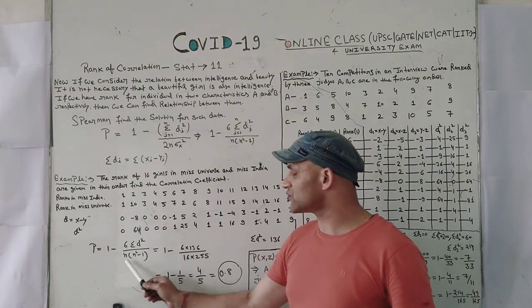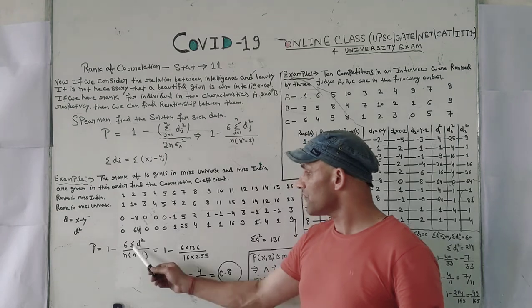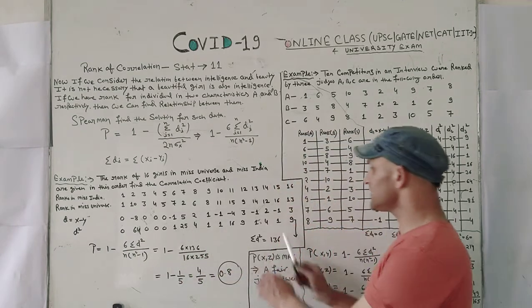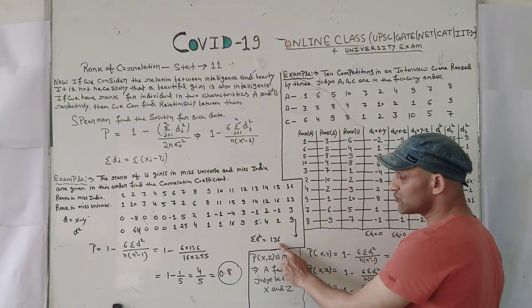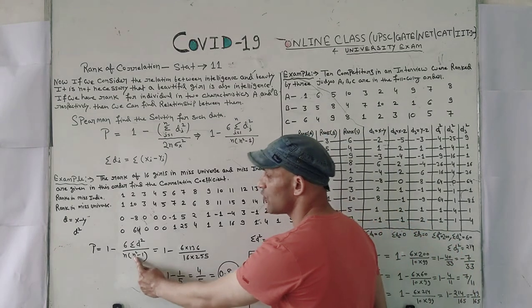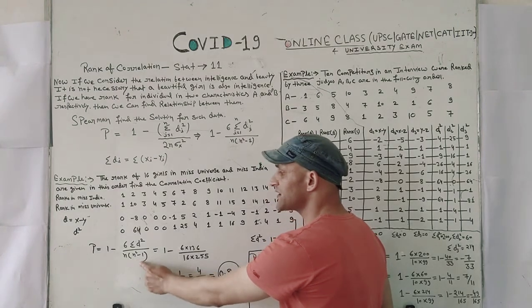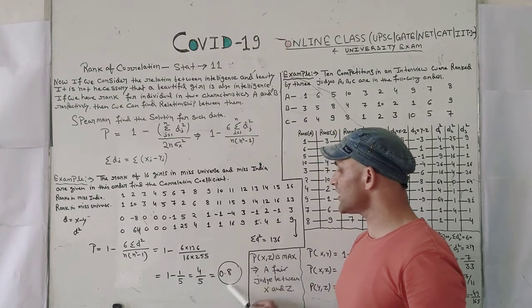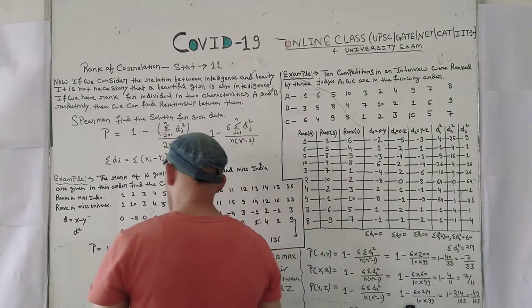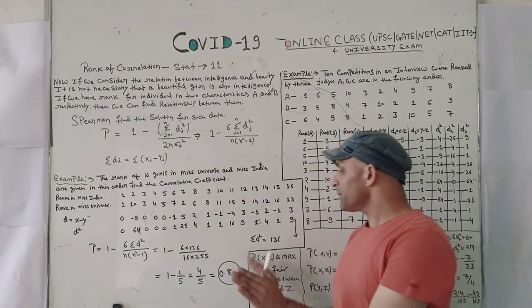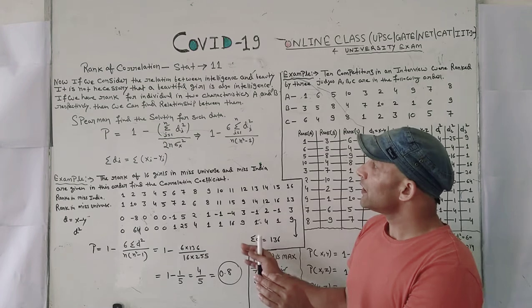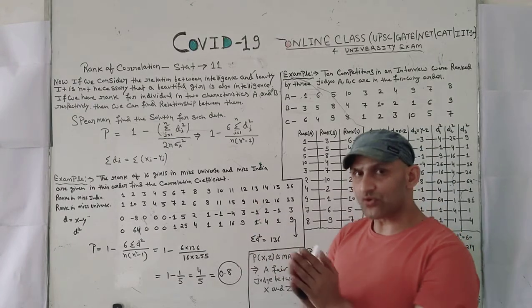We apply the formula: p = 1 minus 6 times sigma d squared, upon n times (n squared minus 1). We put the data: 1 minus 6 times sigma d squared (which is 136), upon 16 times (16²-1) = 16 times 255. We calculate this value and get 0.8. So this is positive — whenever the data is greater than 0, this means the data is positively correlated.